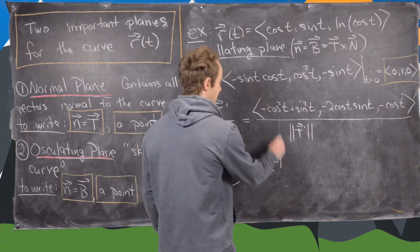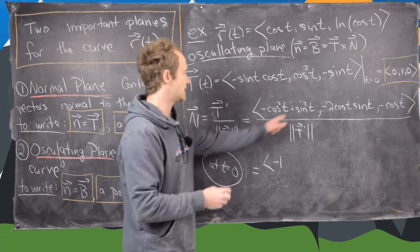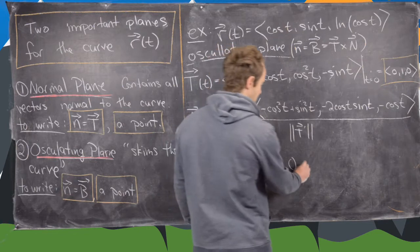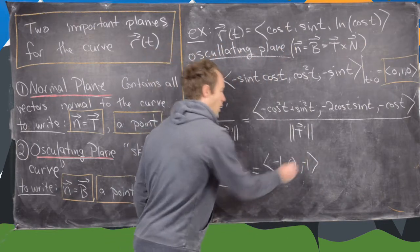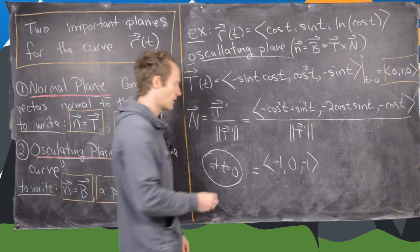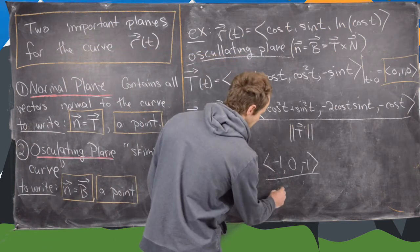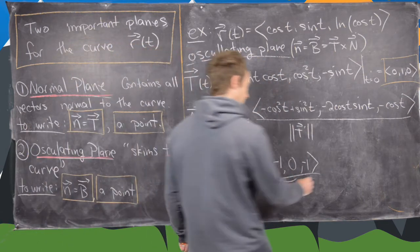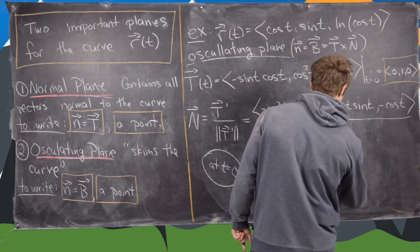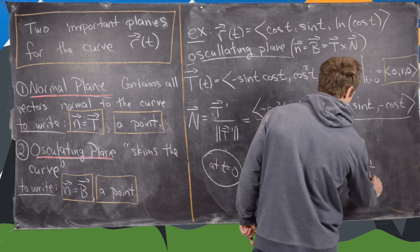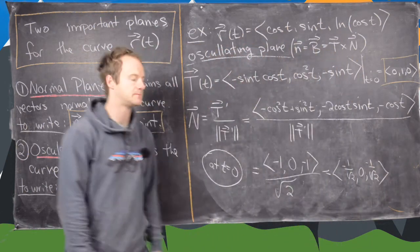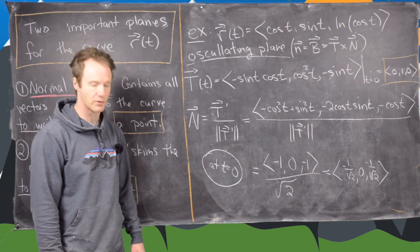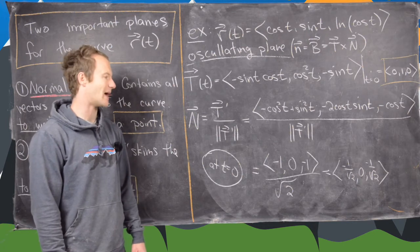Evaluating at t equals 0: the first component gives minus 1 (since sin 0 = 0 and cos 0 = 1), the second component gives 0, and the third gives negative 1. Dividing by the magnitude, which is the square root of 2, gives us the unit normal vector (−1/√2, 0, −1/√2). So we've got our tangent vector and normal vector at the given point, and now we're ready to calculate the binormal vector.